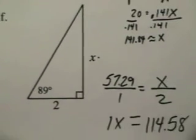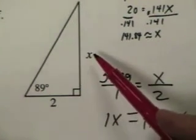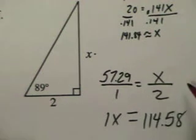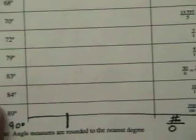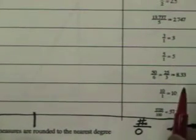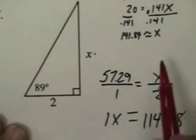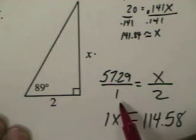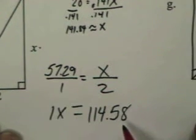The next one gave us a measurement of an angle. And we write our fraction x over 2. You'll see I did that here. And then I look up 89 in the table. And it is 57.29. So I come up here, put 57.29 over 1, cross multiply, and I get 1x equals 114.58.